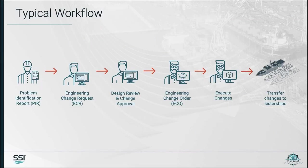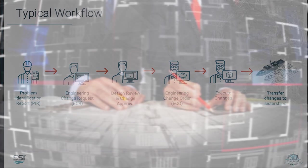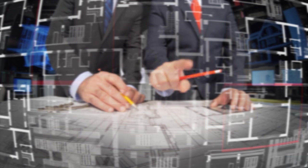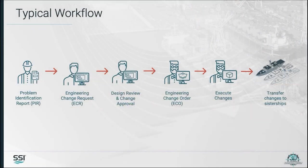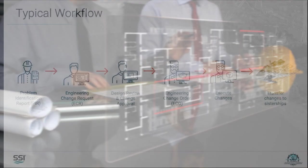The typical workflow for a change seems simple enough. The problem is usually identified in a problem identification report, commonly called a PIR. It may have originated from a customer request, production department, request from the supply chain, or following a design review. An engineering change request, or ECR, is placed by an initiator — the initiator could be the customer, engineering team, or anyone else involved in the product development.